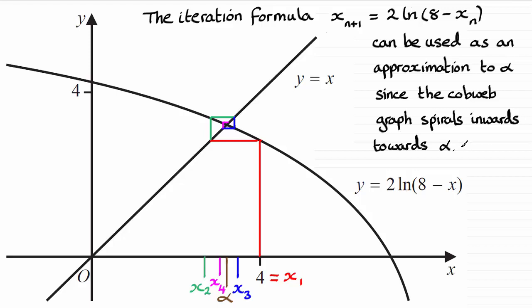So that's basically it. I'm sure you don't need to write in these values for x1, x2, x3, x4 and so on. But you do need to show at least two spirals inwards. And write a conclusion stating that the graph spirals inwards towards alpha to justify the use of this iteration formula.